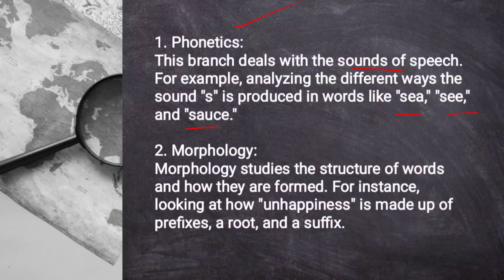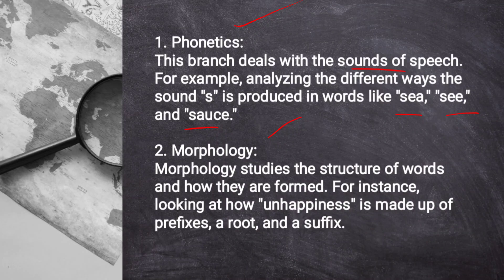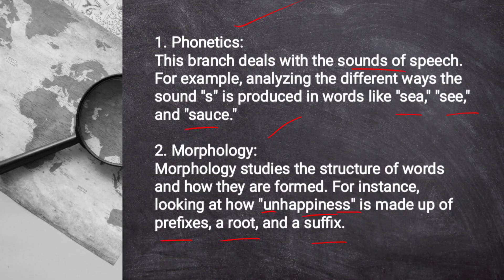The second level is morphology. Morphology studies the structure of words and how they are formed. For instance, looking at how 'unhappiness' is made of a prefix, a root, and a suffix: 'un-' is the prefix, 'happy' is the root word, and '-ness' is the suffix. Similarly, 'disparately' — 'disparate' is the root word and '-ly' is the suffix. In morphology, we study how words are structured and formed.